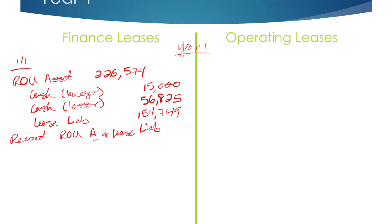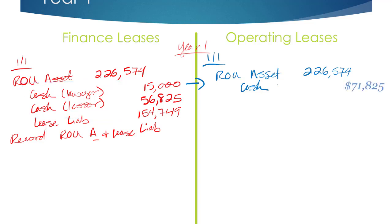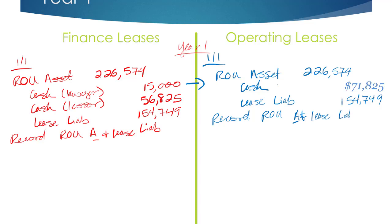For an operating lease, which is what this lease would probably be, the nice thing is that journal entry would look exactly the same. We wouldn't normally break out lawyer versus lessor separately — you'd just have one credit to cash. And that's step two: creating the right-of-use asset and recording the lease liability. Step three covers all the other journal entries we have to make with this lease.